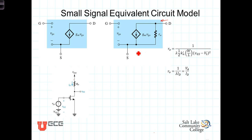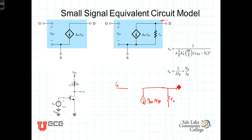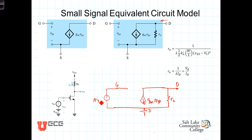To use the small signal model to do small signal analysis, we deactivate the DC sources and place this model in as follows. We've got our model with the gate here, our current source coming down here with value G sub M VGS, and R0 there. That then constitutes the drain. Down here we have the source, which in this case is tied to ground. Having shorted out the VGS voltage, we then have just the small signal voltage here.